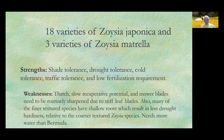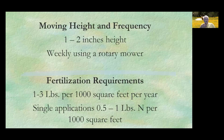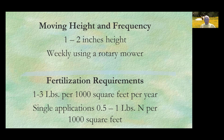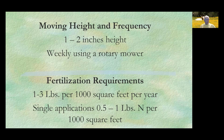Zoysia needs a little more water than Bermuda. Mowing height and frequency: mow from one to two inches height, weekly, using a rotary mower. Fertilization requirements are one to three pounds per 1,000 square feet per year. Single applications of a half pound to one pound of nitrogen per 1,000 square feet.